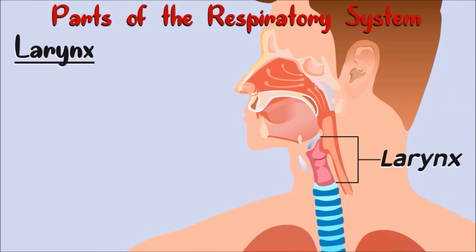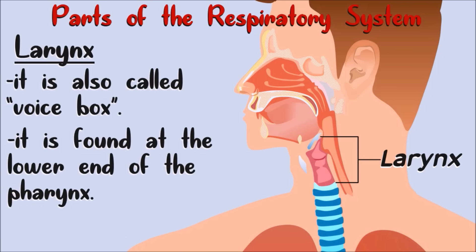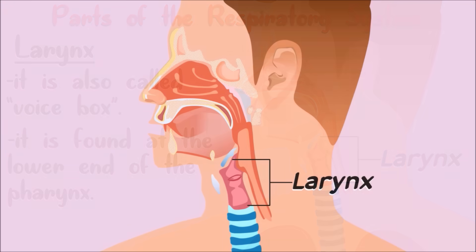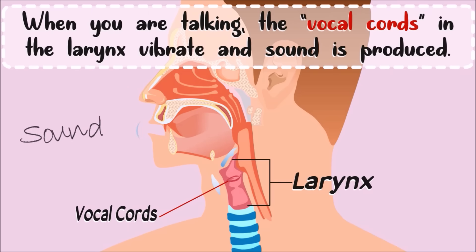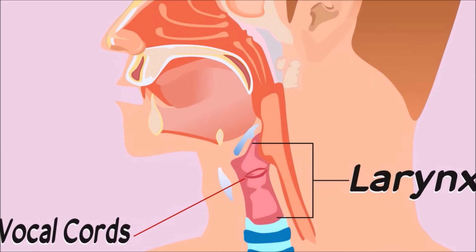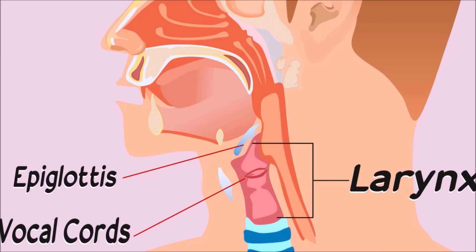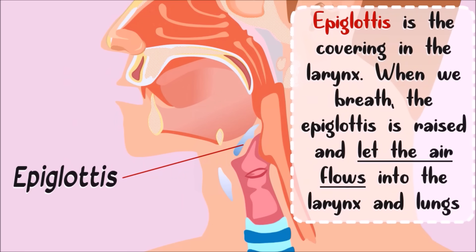This is the larynx — it is also called the voice box. It is found at the lower end of the pharynx. When you are talking, the vocal cords in the larynx vibrate and sound is produced. This structure is called the epiglottis. The epiglottis is the covering of the larynx. When we breathe, the epiglottis is raised and lets air flow into the larynx and to the lungs.